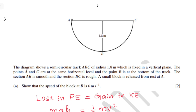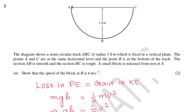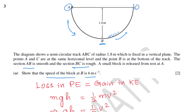Question three. The diagram shows a semicircular track ABC of radius 1.8 meters fixed in a vertical plane. Points A and C are at the same horizontal level, and point B is at the bottom of the track. Section AB is smooth and section BC is rough. A small block is released from rest at A. Show that the speed of the block at B is 6 meters per second.